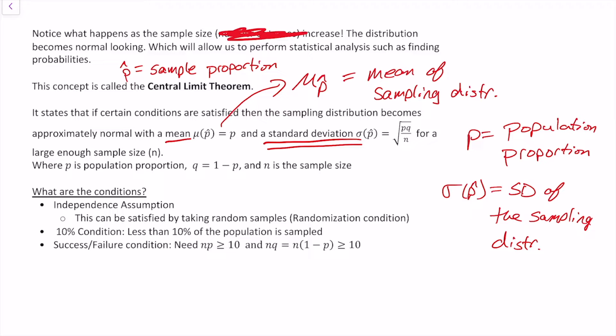From our discussion of binomial probabilities, p and q should be familiar. Think of p as your success rate and q as your failure rate, which is why q equals 1 minus p, as we've seen before. And n is your sample size — that's the difference between all those histograms we saw earlier: the sample size.